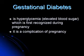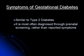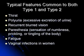The third type, gestational diabetes, is hyperglycemia or elevated blood sugar which is first recognized during pregnancy. It is a complication of pregnancy. Symptoms are similar to type 2 diabetes, and it is most often diagnosed through prenatal screening rather than reported symptoms.